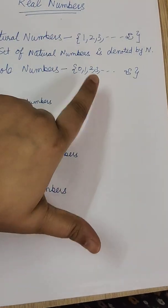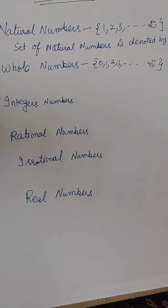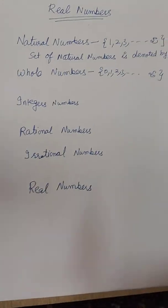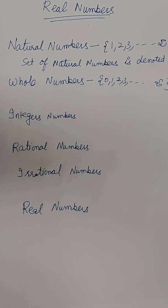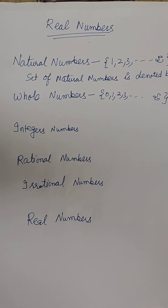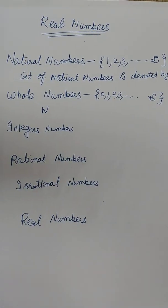Yes, all the natural numbers are in whole numbers, except that 0. So this is the major difference. Many times this question is there in the exams. Why whole numbers are different from natural numbers or why natural numbers are different from whole numbers. Only this is the reason. So the set is denoted by capital W. Clear.